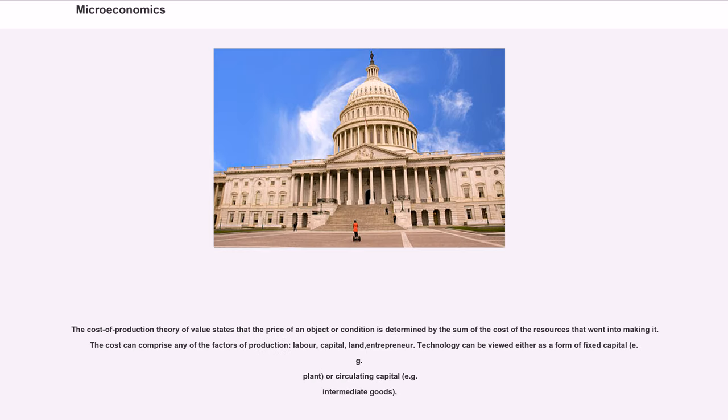The cost of production theory of value states that the price of an object or condition is determined by the sum of the cost of the resources that went into making it. The cost can comprise any of the factors of production: labor, capital, land, entrepreneur.